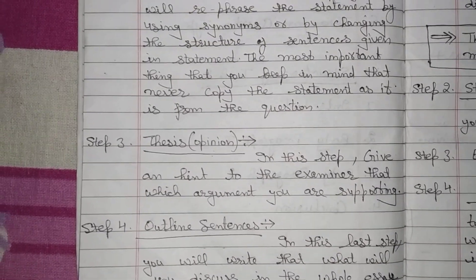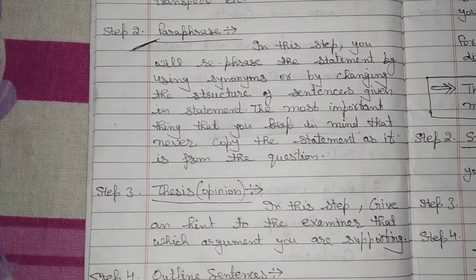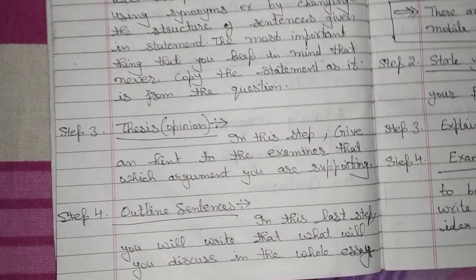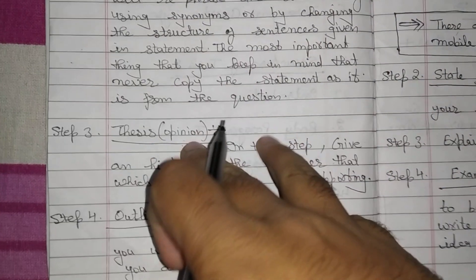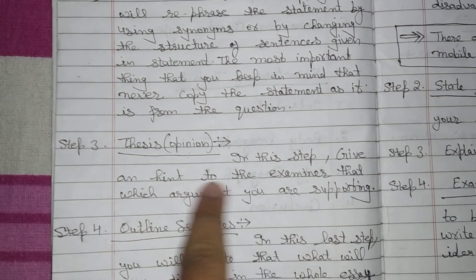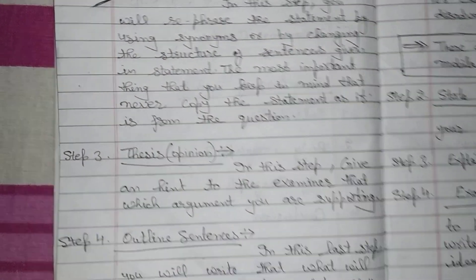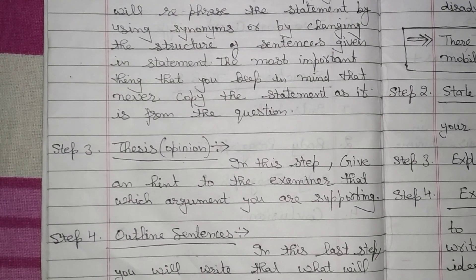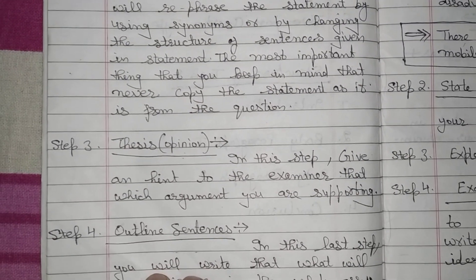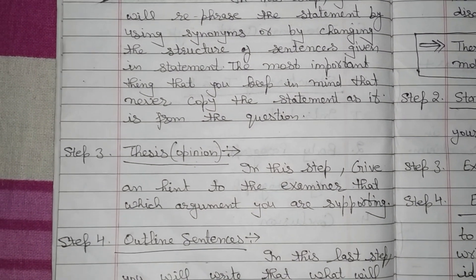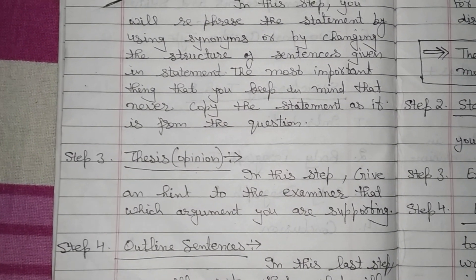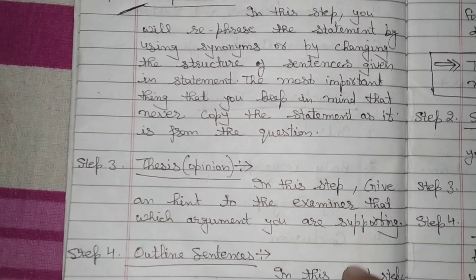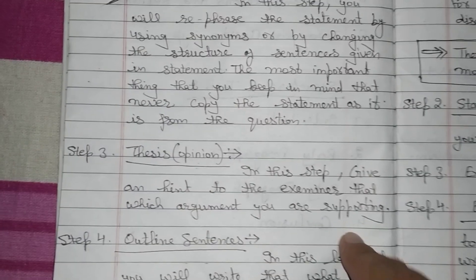Now the third step is the thesis. In this step, you give a hint to the examiner about which argument you are supporting. This is a small hint telling the examiner whether you agree with the statement, disagree with the statement, think the advantages are greater, or think it is more disadvantageous. The thesis means giving a hint to the examiner about which side you are going to favor.